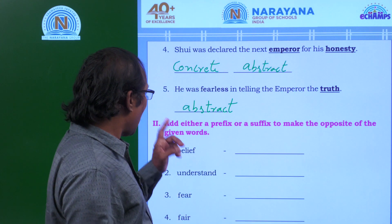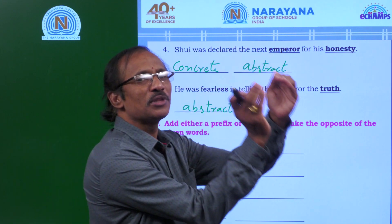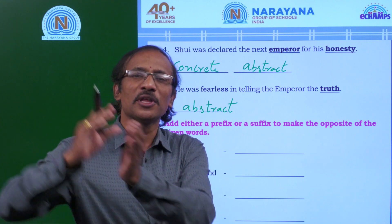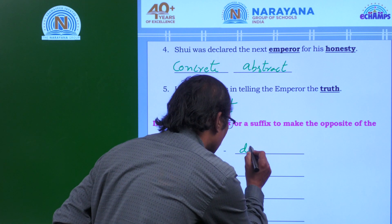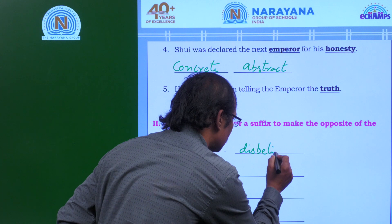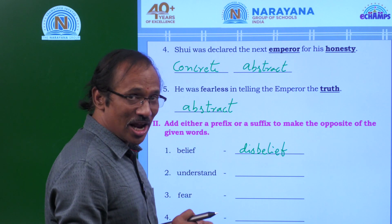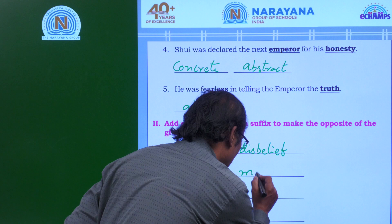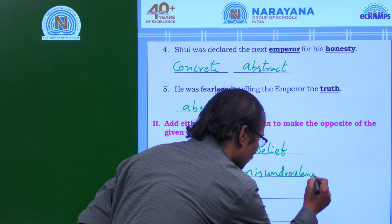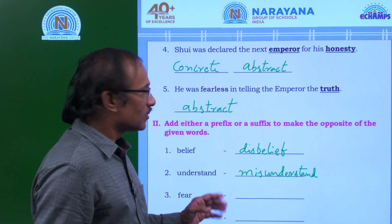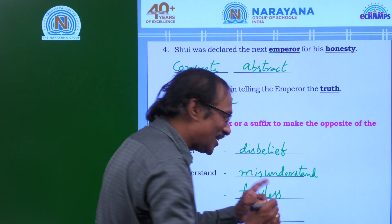Roman number two: add either a prefix or a suffix to make the opposite of the given words. A prefix is fixing something before the word; a suffix is fixing something after the word. Belief becomes disbelief — I have added 'dis' as a prefix. Understand becomes misunderstand. Fear becomes fearless — here 'less' is a suffix.